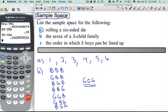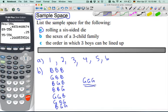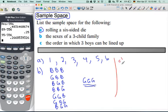So the order in which three boys can be lined up, that's a bit different. Different spin there. So what happens with that one? Well, let's name the boys first. I'm going to say Adam, Brian, and Cody. So A, B, and C to make life easier.